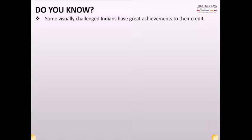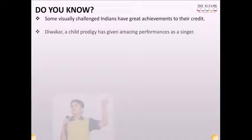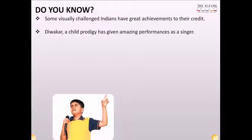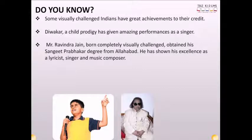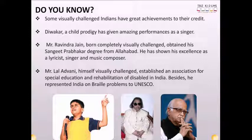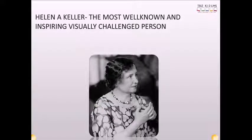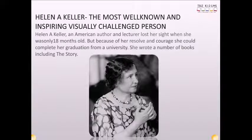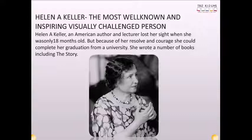Do you know, some visually challenged Indians have great achievements to their credit. Divakar, a child prodigy, has given amazing performances as a singer. Mr. Ravindra Jain, born completely visually challenged, obtained his Sangeet Prabhakar degree from Allahabad. He has shown his excellence as a lyricist, singer, and music composer. Mr. Lal Advani, himself visually challenged, established an association for special education and rehabilitation of disabled in India. Besides, he represented India on Braille problems to UNESCO. Helen Keller, the most well-known and inspiring visually challenged person. Helen Keller, an American author and lecturer, lost her sight when she was only 18 months old. But because of her resolve and courage, she could complete her graduation from a university. She wrote a number of books, including The Story.